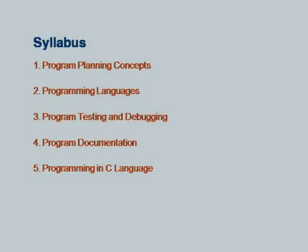Chapter three covers Program Testing and Debugging. Chapter four is Program Documentation, which consists of different manual systems like user manuals. Chapter five is entirely about C concepts and programming in C language, covering data types, looping, control structures, functions, arrays, structures, and unions.